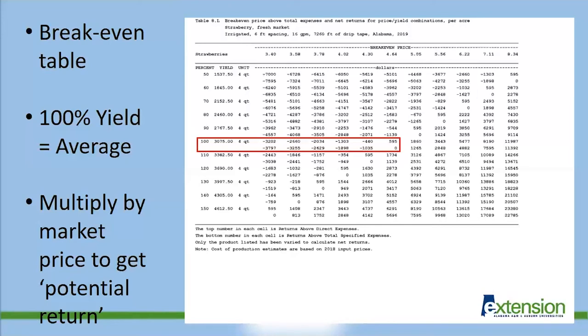There are two numbers with each combination. The top number is revenue over direct expenses, and the bottom is revenue over total expenses. For the most part, we are concerned about covering our total expenses.